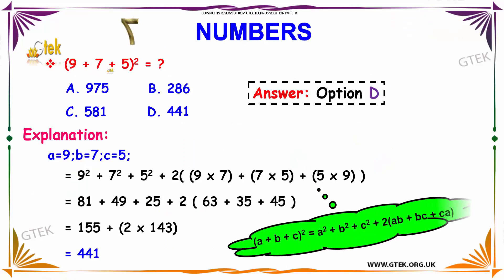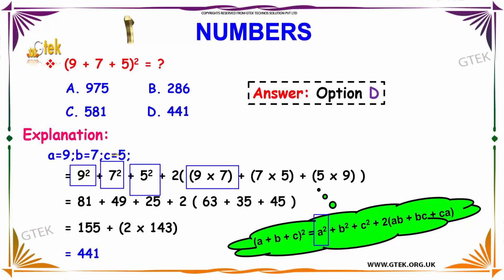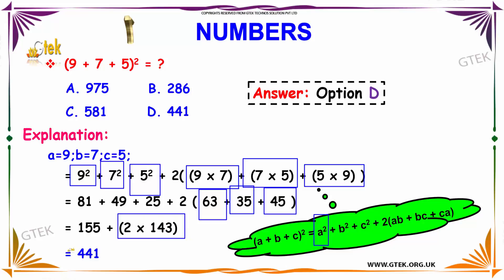Now for the problem: 9 plus 7 plus 5 whole square. So a equals 9, b equals 7, c equals 5. We compute 9 square plus 7 square plus 5 square plus 2 into 9 into 7, plus 7 into 5, plus 5 into 9. That gives 9 into 7 is 63, 7 into 5 is 35, and 5 into 9 is 45. So 2 into 143 gives us 441.